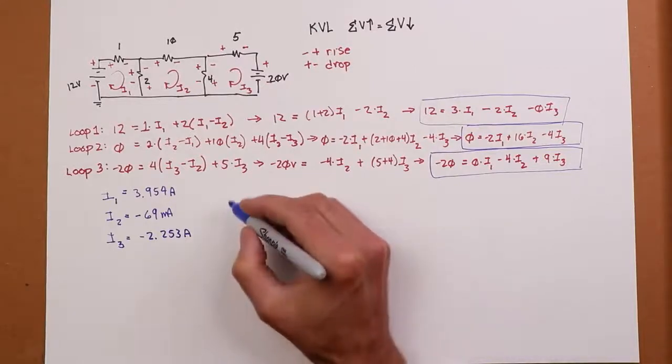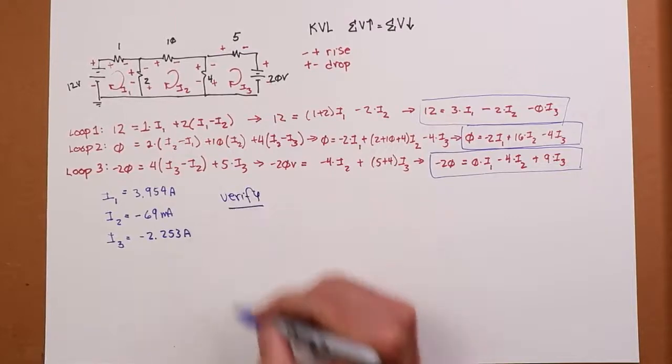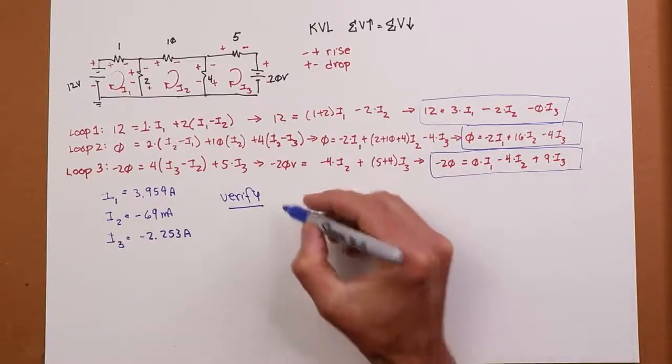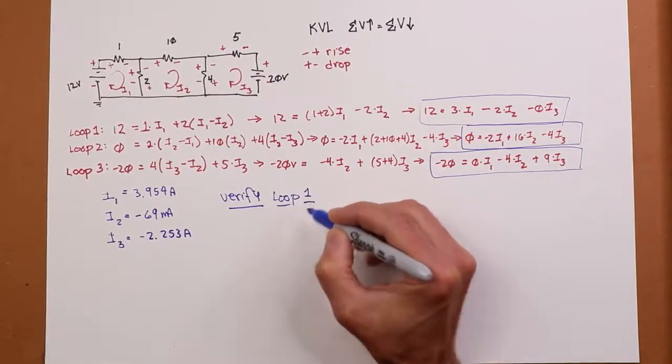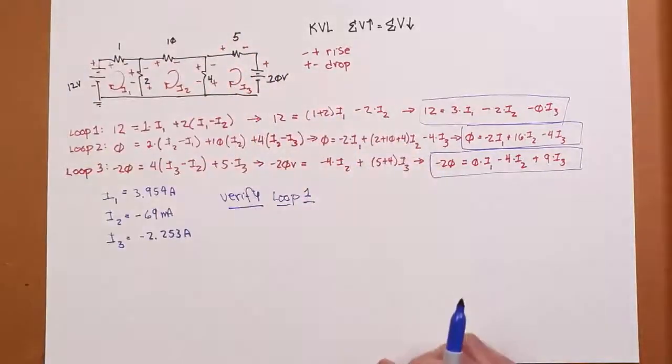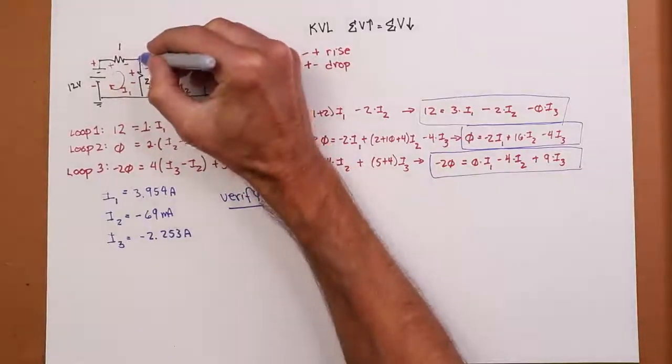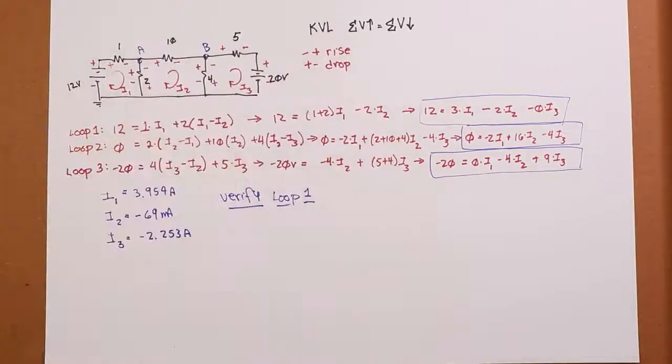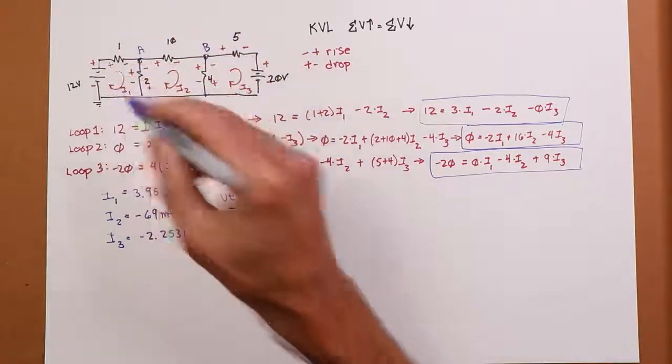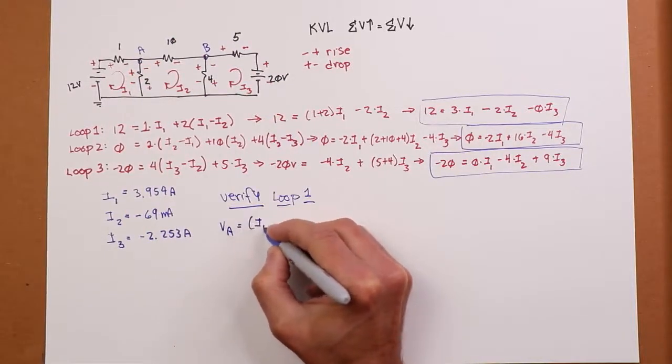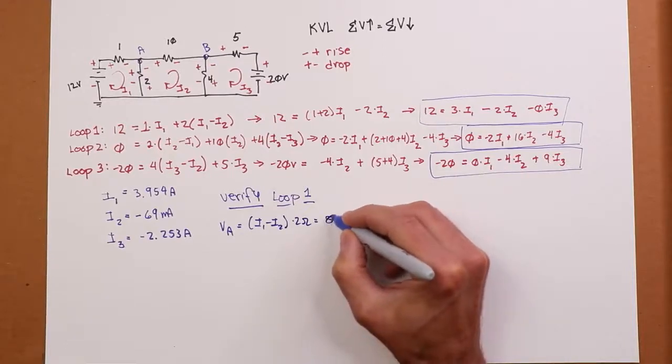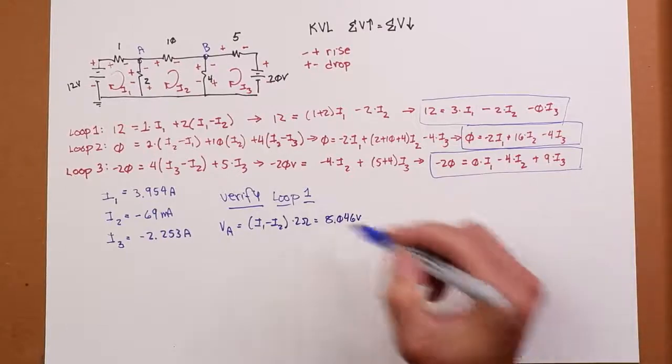So, let's do a little verification on this thing. How do I know I didn't punch some numbers into a calculator wrong? Or maybe I missed something along the way. So, I'll just verify loop 1. You'd really want to do this for all of them, but just to show you how. I look around loop 1. I know that this drop plus this drop has to equal this rise. So, the VA, we called this VA originally in the other video, is the drop across the 2 ohm, which in our definition is I1 minus I2, that current, times 2 ohms. So, you plug these two currents in, and you will wind up with 8.046 volts, which, not coincidentally, is the value that we got for VA when we did it via nodal.